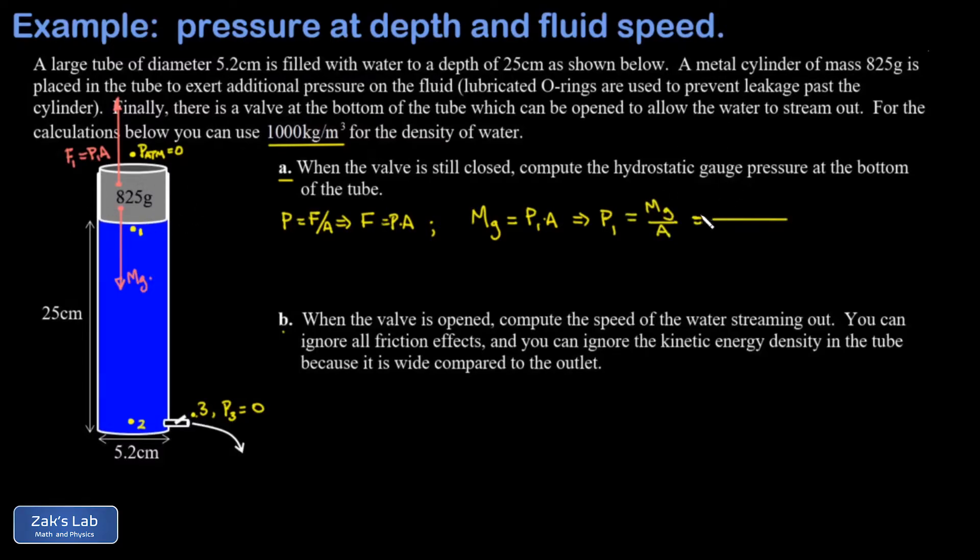We plug in the mass of the cylinder, 0.825 kilograms, converting to SI units. g is 9.8 meters per second squared. The cross-sectional area, well it's a tube with diameter 5.2 centimeters, so we use one quarter π times diameter squared. The diameter in SI units is 0.052 meters. When we run the numbers we get 3807 pascals.